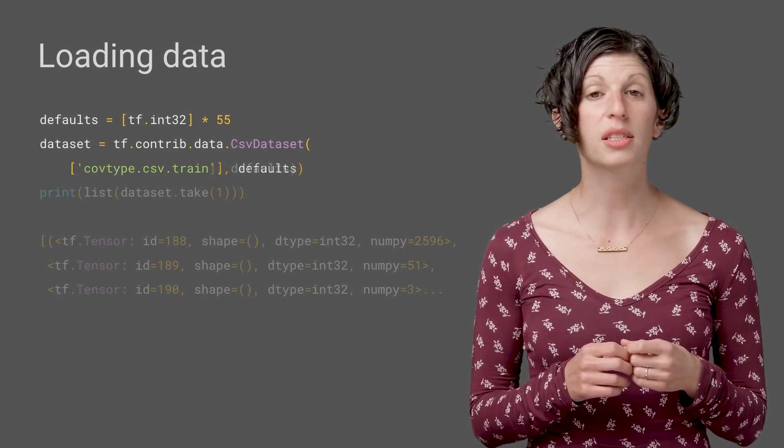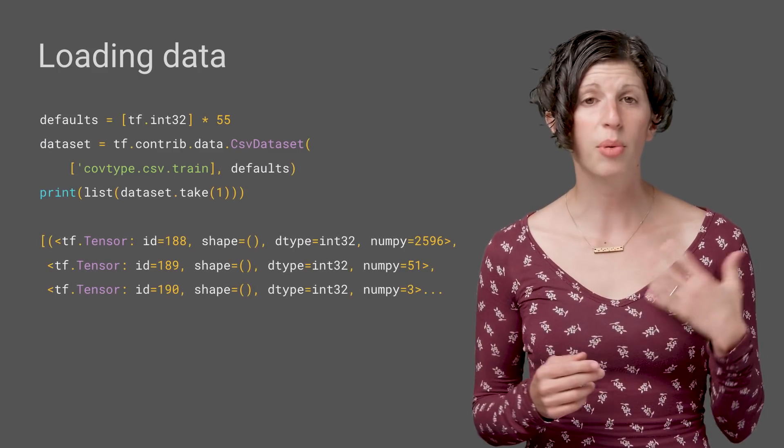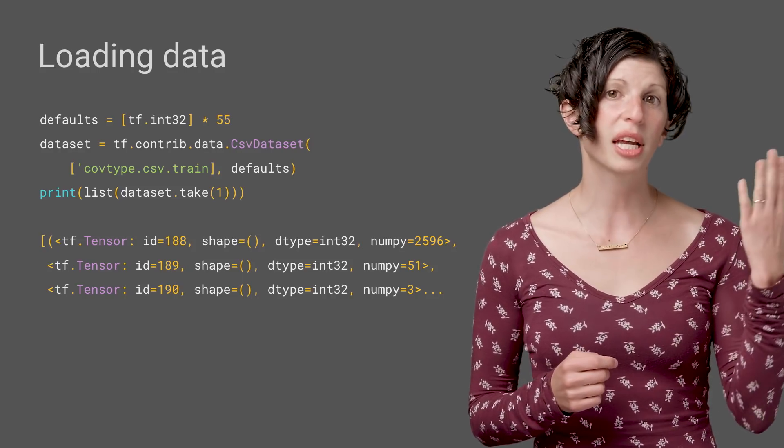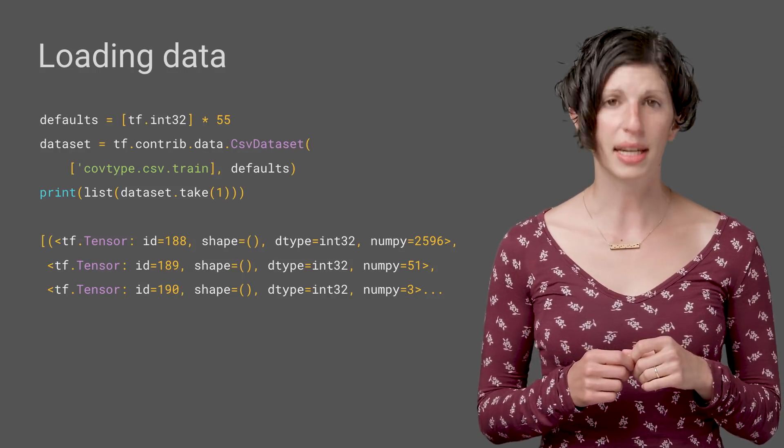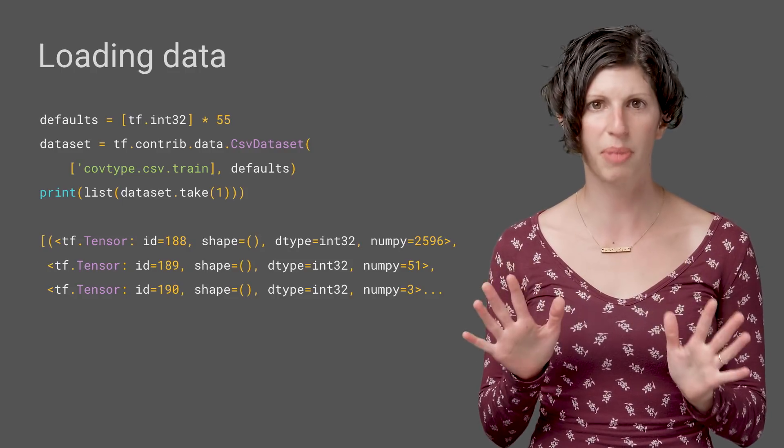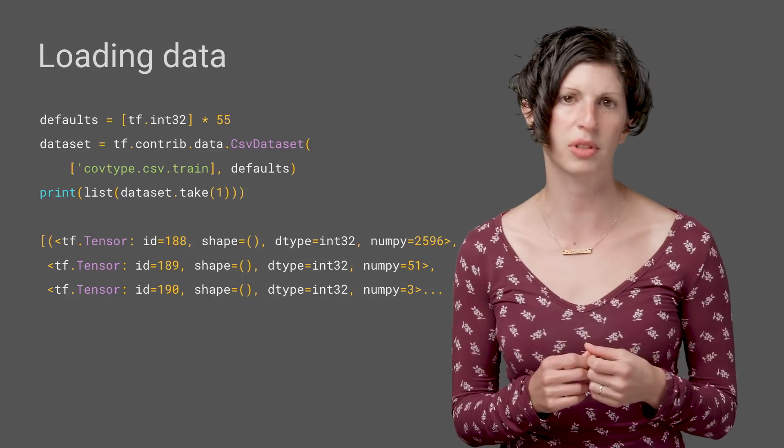Because we are running with eager execution enabled, our data set here does already represent our data, and we can even check to see what each row currently looks like. If we take the first row, we can see that right now, each row is a tuple of 55 integer tensors, not yet processed, batched, or even split into features and labels.